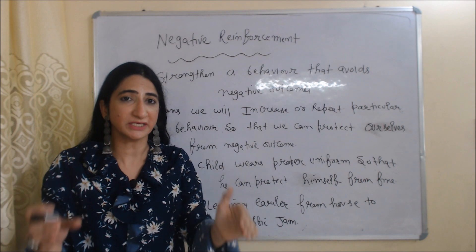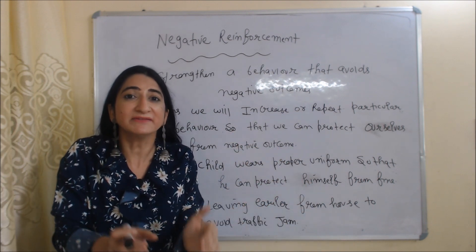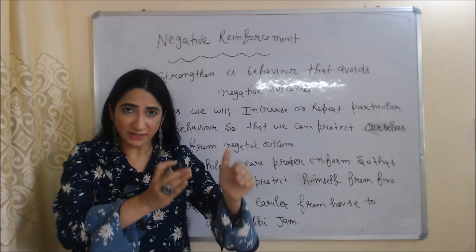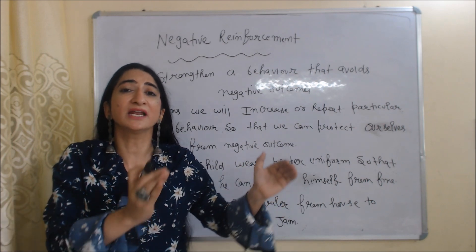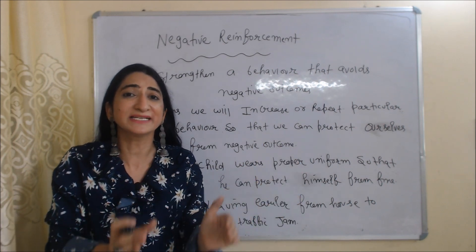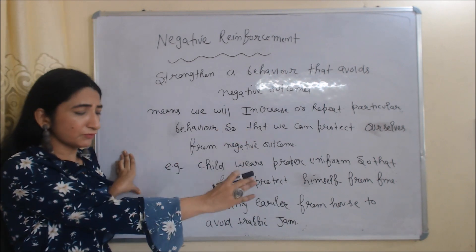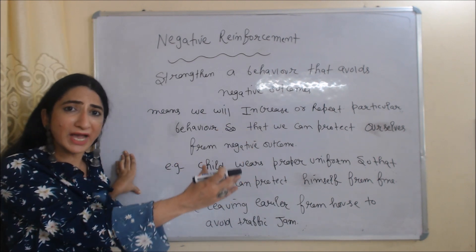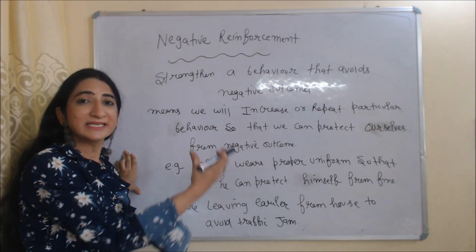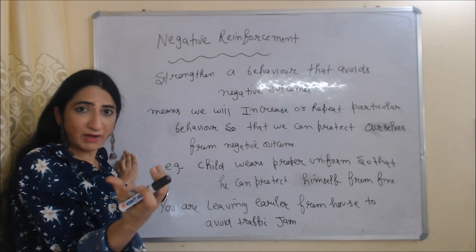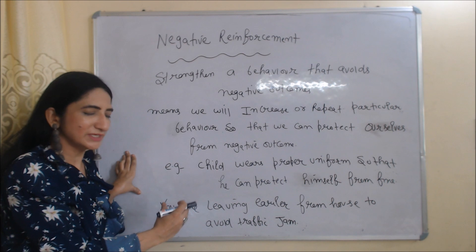For example, a child wears proper uniform so that he can protect himself from a fine. Here the child is doing a particular behavior so that he can protect himself from a negative outcome. A second example: you leave home earlier to avoid a traffic jam. Here you are doing something to protect yourself from a negative outcome.